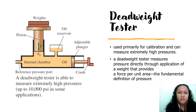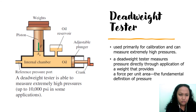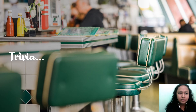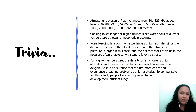The dead weight tester is often used in calibration and can measure extremely high pressures. For smaller weights, a hydraulic jack is used.